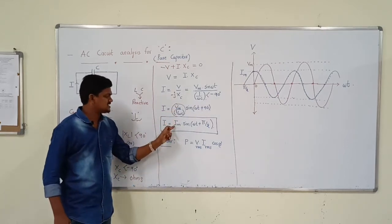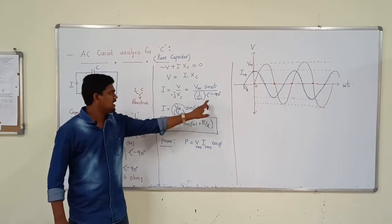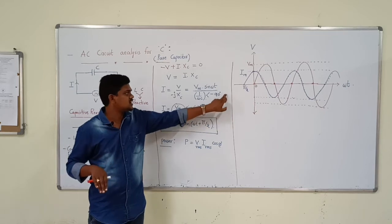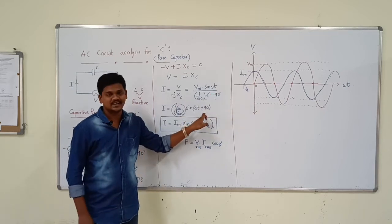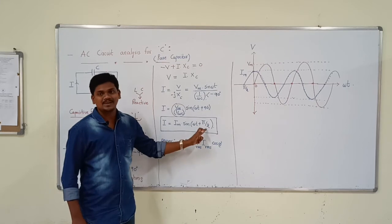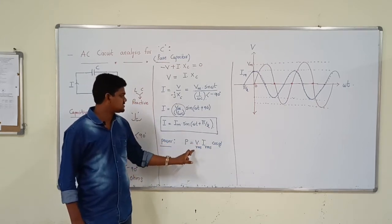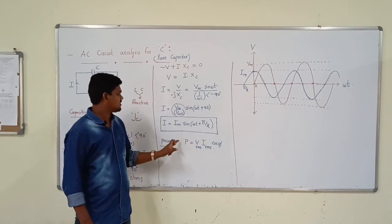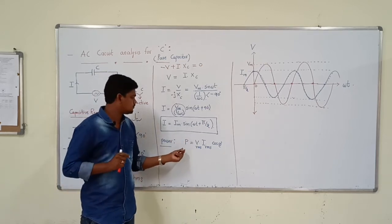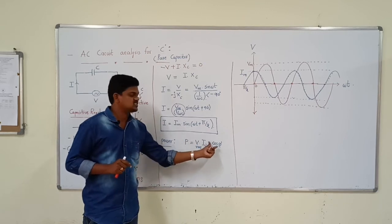Directly, V divided by 1 by omega C can be written as Im. In the denominator it has minus 90; when it comes to the numerator it becomes plus 90. So I equals Im sin omega t plus 90. Power is simply P equal to Vrms into Irms into cos phi.